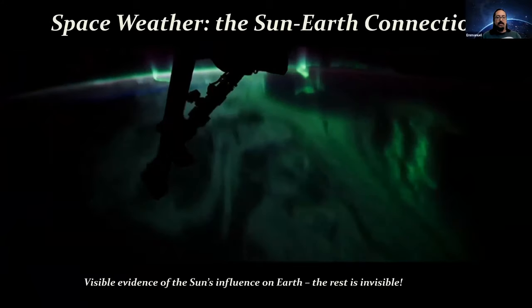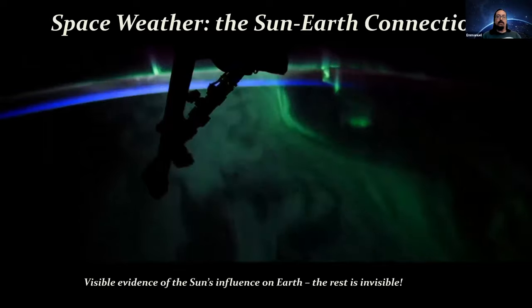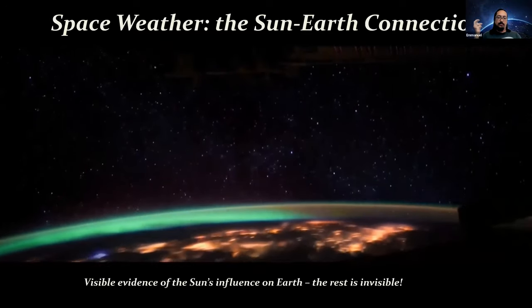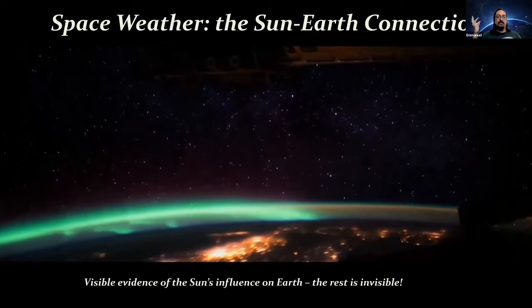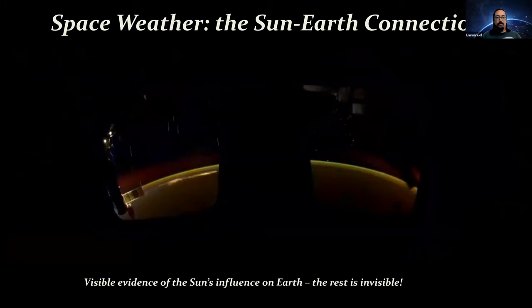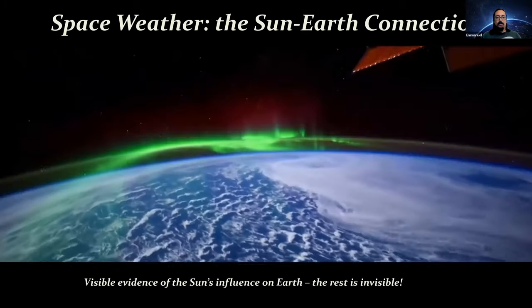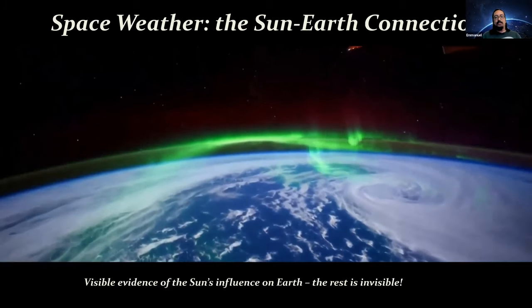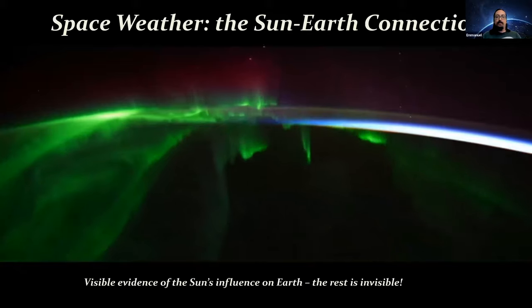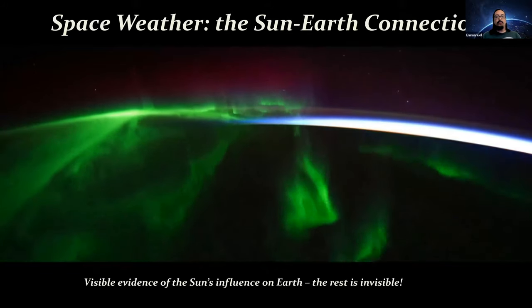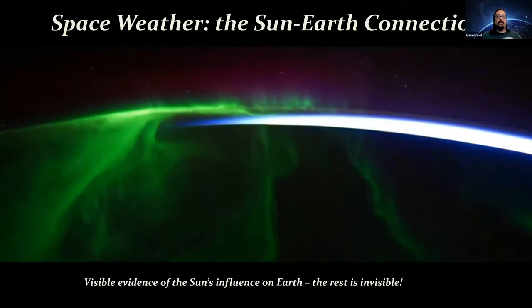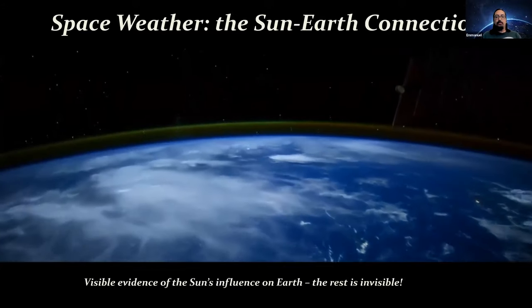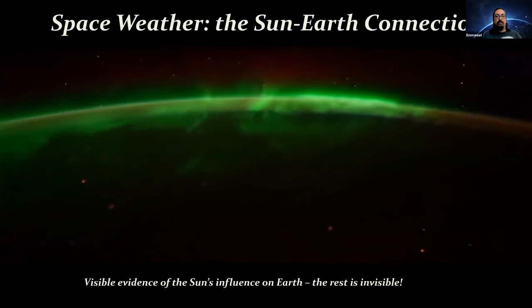This is visible evidence that the sun is influencing our planet and sending streams of particles that cause the sky to glow. The rest of what we study is invisible. Like Ali said, we have many satellites that can measure what's happening between the sun and Earth. We can see what's happening in the sun and in the aurora, but in between is still really difficult to study.